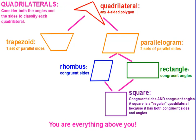Quadrilaterals. Consider both the angles and the sides when classifying quadrilaterals. To be a quadrilateral, you just need any four-sided polygon.